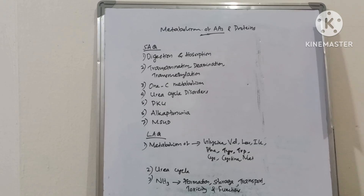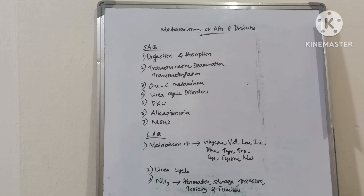Metabolism of amino acids and proteins, short answer questions: digestion and absorption of proteins, transamination, deamination and transmethylation, one-carbon metabolism, urea cycle disorders, phenylketonuria, alkaptonuria, MSUD.